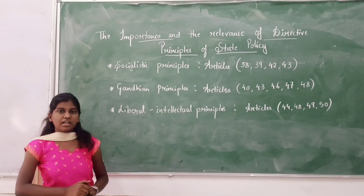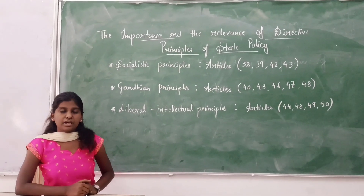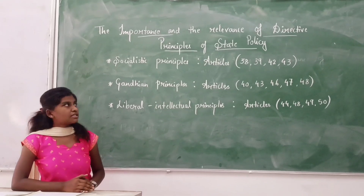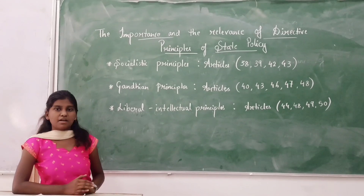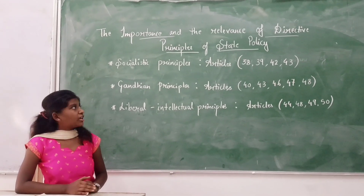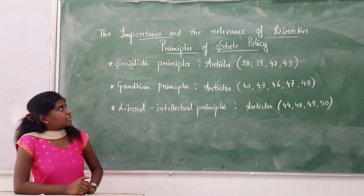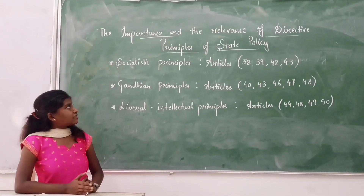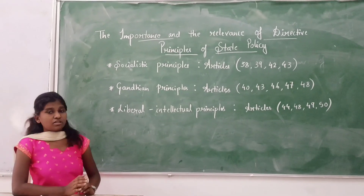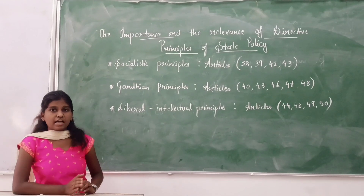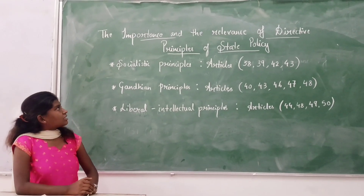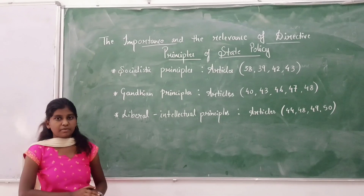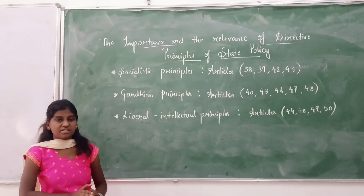Fundamental rights and directive principles of state policy go hand in hand. Directive principles of state policy come under articles 36 to 51. These directive principles are classified into different types: socialistic principles, Gandhian principles, and liberal intellectual principles.